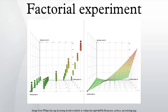The factorial points can also be abbreviated by (1), a, b, and ab, where the presence of a letter indicates that the specified factor is at its high level and the absence of a letter indicates that the specified factor is at its low level setting. (1) is used to indicate that all factors are at their lowest values.